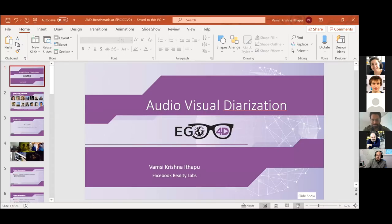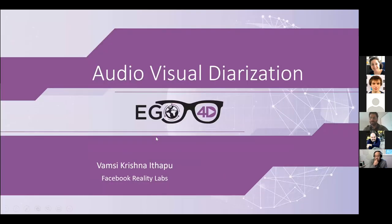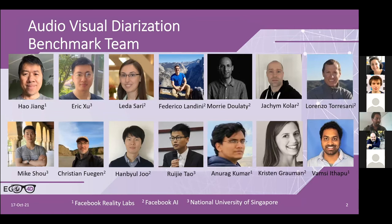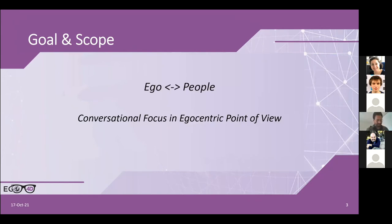Now for the audio-visual diarization benchmark. Building on the previous benchmarks where the entity of interest was objects, here we are interested in modeling the ego's interactions with people in the scene — in particular, the conversational dynamics from the ego's perspective. Looking at examples from the Ego4D dataset reveals critical observations about the scope of this benchmark.